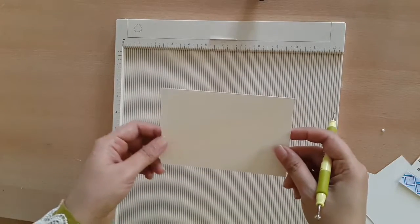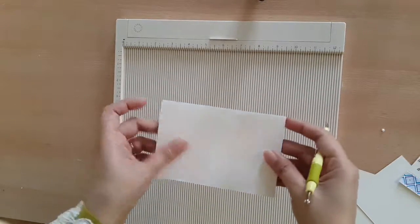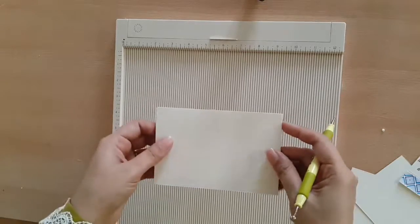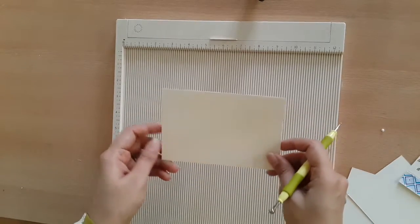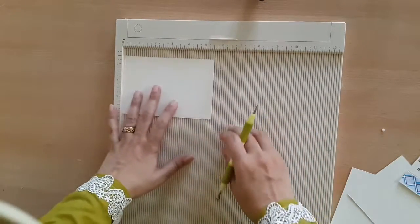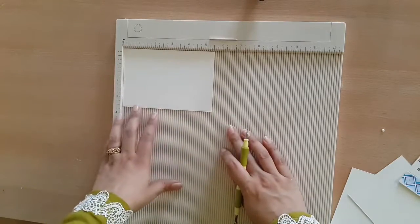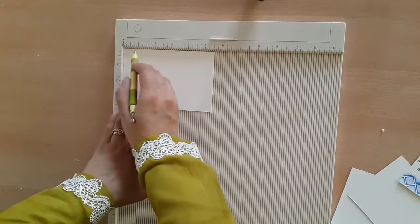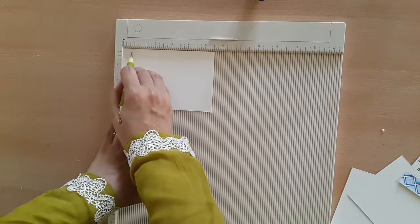I'm just going to go over three which I find to be the most useful. You begin by aligning your cardstock to the scoreboard, and then you start scoring at one-inch intervals, half-inch intervals. Can you see that?